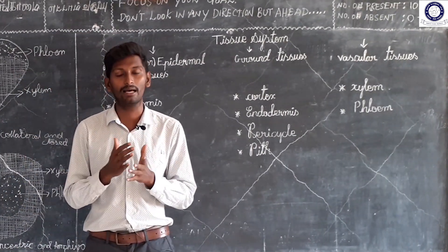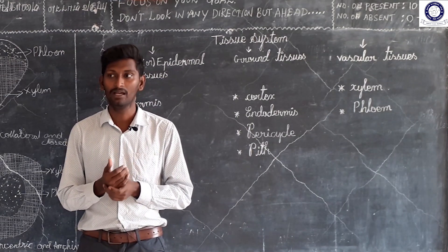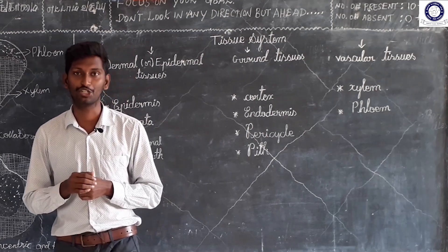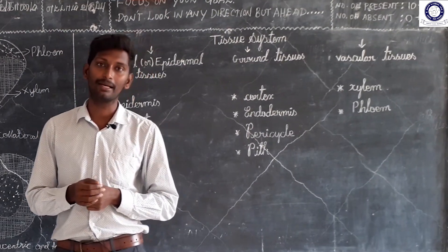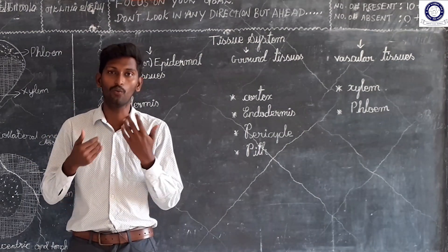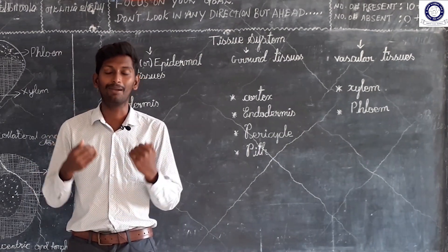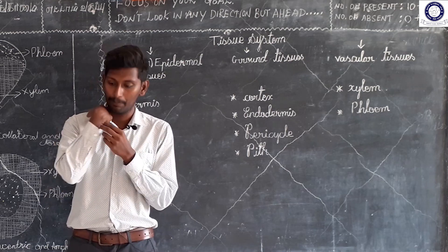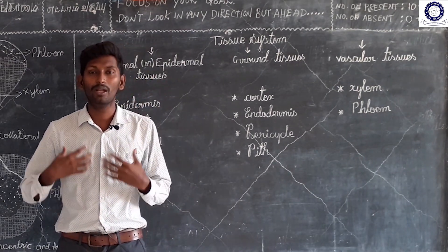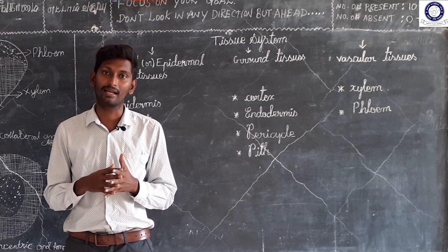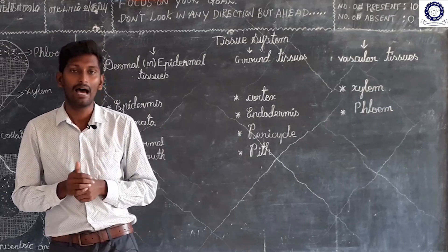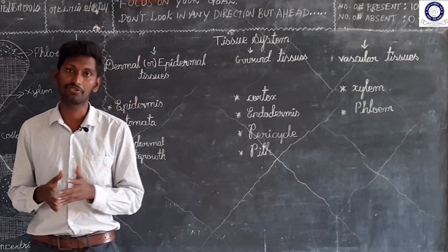Tissue is a group of cells. The tissue of the body — when you look at the plant, it is the tissue system.